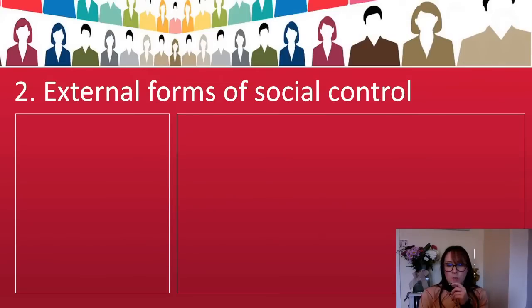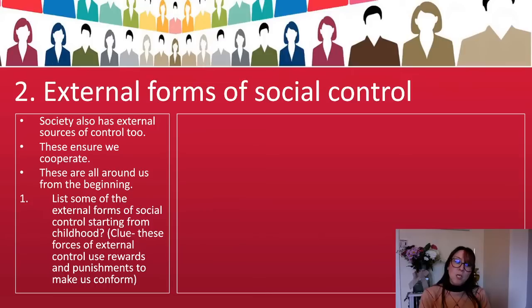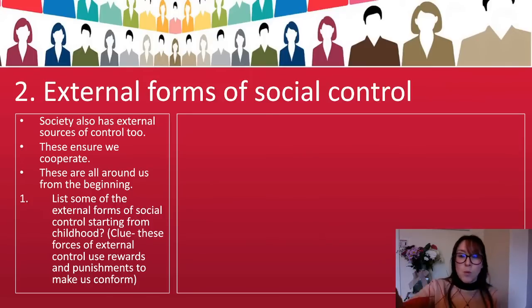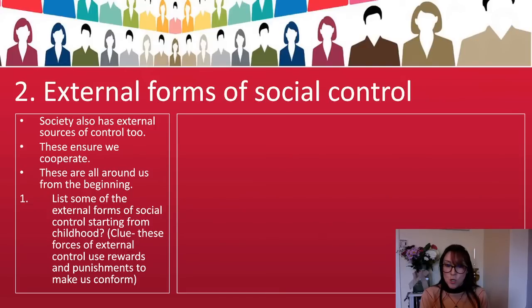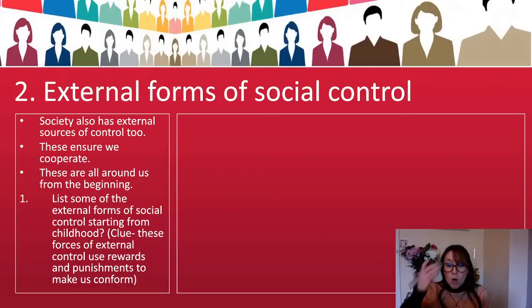External forms of social control — society has external sources of control too. These ensure we cooperate, and they are around us all the time from the beginning. I got my students to write a list of all the external forms of social control starting from childhood. External is often where rewards and punishments are used to help us conform. You could talk about how your parents enforced social control — the naughty step, things removed, not allowed to the park. Your teachers will have always enforced social control — isolations, detentions, the naughty corner.